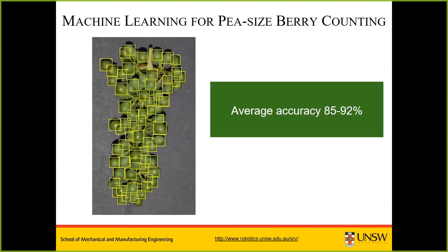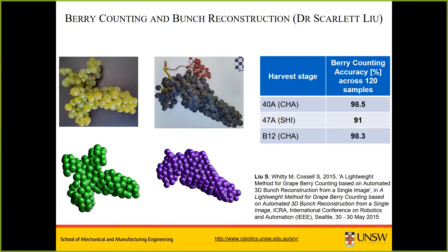For the machine learning approach for berry counting, we achieved accuracy over 90% in some cases and in all cases over 85% from a single image. The 3D reconstruction applied to bunches close to harvest achieved 88–90% accuracy for a single bunch. When applied across around 120 bunches photographed across an entire block, accuracy improves markedly, up to 98% in a couple of blocks. Taking more images clearly improves accuracy, and this work has been published.